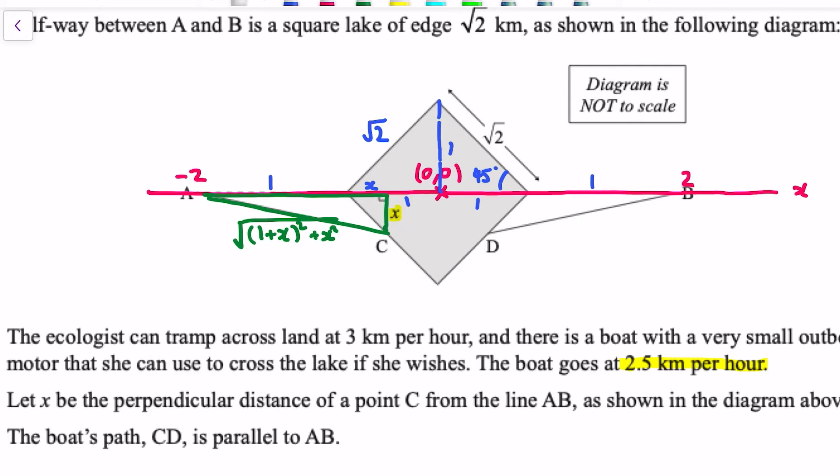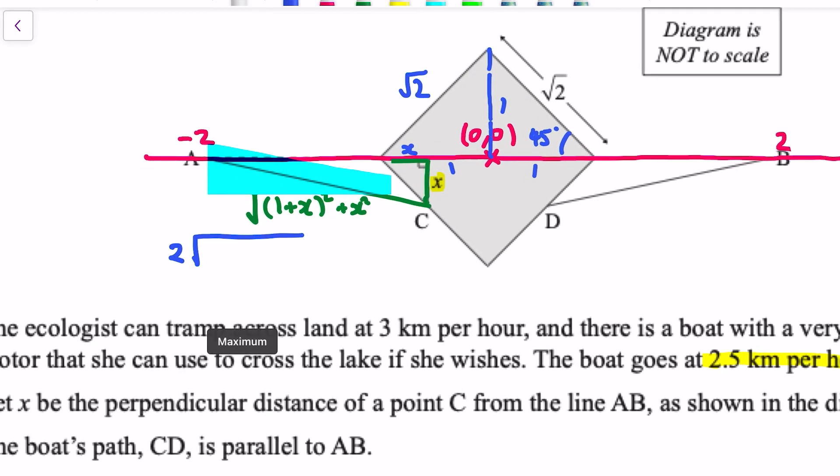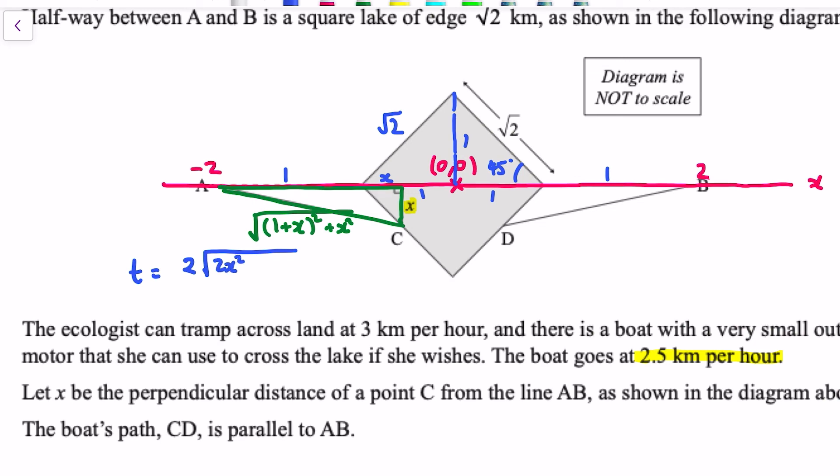So we've got time equals 2 lots of that distance. And I can expand the stuff underneath as well. 1 plus X all squared is X squared plus another X squared is 2X squared plus 2X plus 1, and that's all divided by 3. Distance divided by speed equals time. And then the other part of the journey, which is this bit in here on the boat, using symmetry, this would be X and the whole diagonal is 2. So this length is 2 minus 2X. So the time by boat is 2 minus 2X all divided by 2.5. And if we add those two times together we get the total time. And bearing in mind I've put the 2 in there so I've already factored in the right hand side as well.